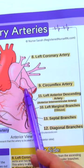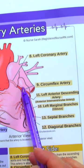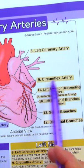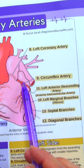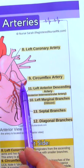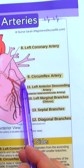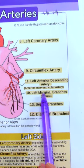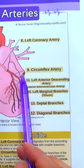The left coronary artery comes down and branches off into the circumflex artery, which circles around to the posterior side of the heart. It has its own branches, like the left marginal branches.